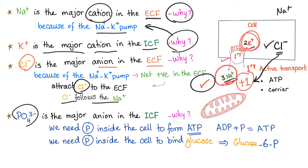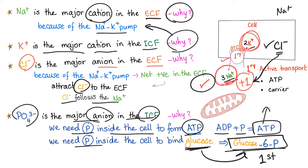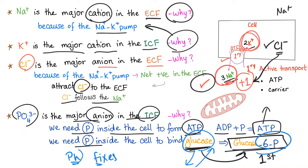Phosphate is the major anion in the intracellular fluid. Why? Because we need phosphate inside the cell to form ATP (ADP + phosphate = ATP), and to bind glucose — glucose is converted to glucose-6-phosphate as the first step in glycolysis. Phosphate fixes stuff: it fixes glucose inside the cell. Glucose alone can go in and out; binding it with phosphate traps it inside.